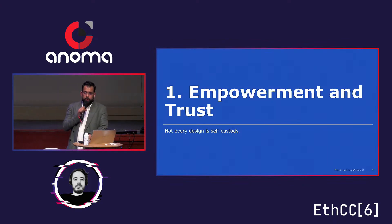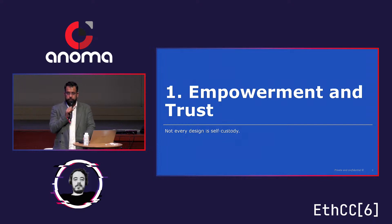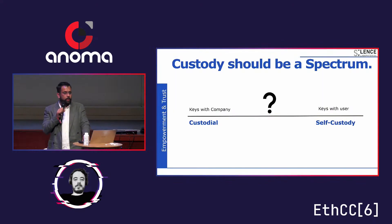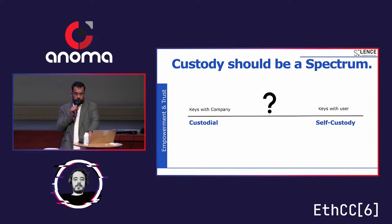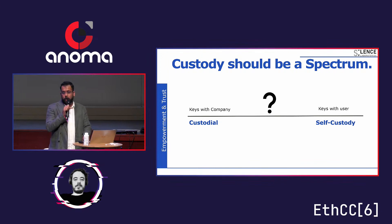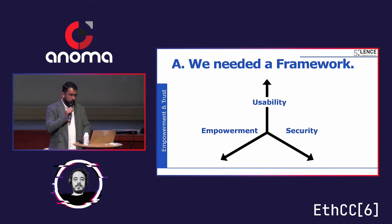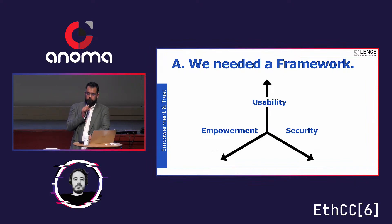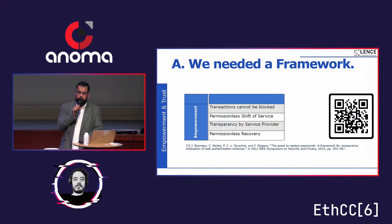First thing: empowerment and trust. Not every design is self-custody. This we have learned while serving our customers and providing our libraries which are application-agnostic. Until now, the whole field has been binary — either custody or self-custody. But certainly custody is a spectrum, and we have to see how we can define that. So we chose a framework which has three variables: usability, empowerment, and security. We use the axes of empowerment and trust to define the custody spectrum.